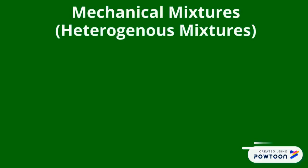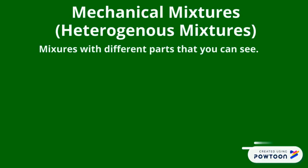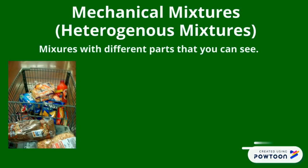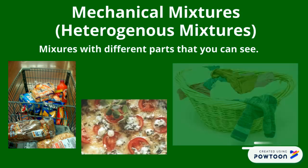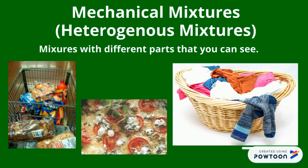Mechanical mixtures or heterogeneous mixtures are mixtures with different parts that you can easily see and separate. For example: a shopping cart full of different items, soup with feta cheese and tomatoes, or a laundry bin with a pink t-shirt and blue socks.